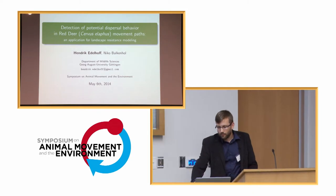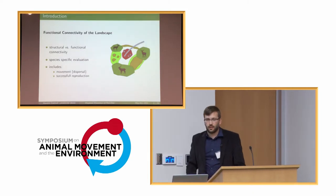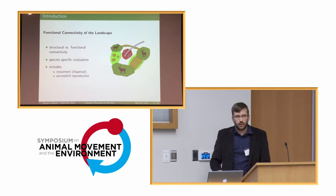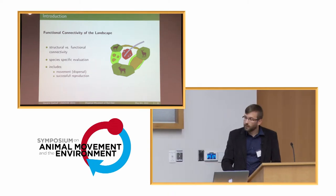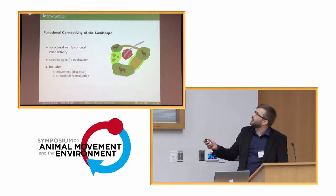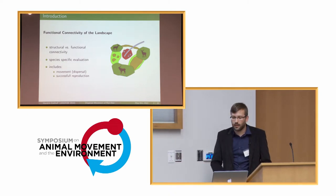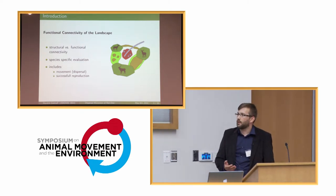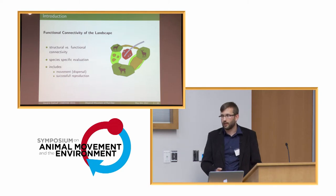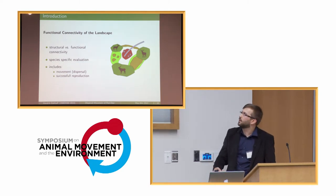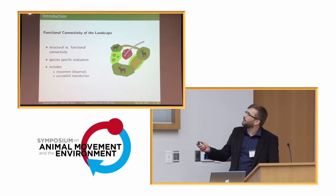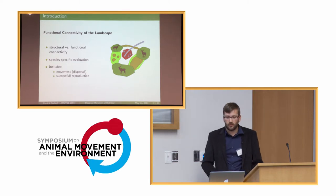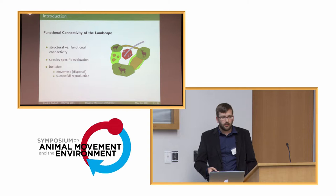We'll start with a short explanation of what functional connectivity is, because not everyone might be familiar with this term. If we look at landscape connectivity, we have to differentiate between structural and functional connectivity. Structural connectivity takes into account existing corridors of one habitat type connecting other existing habitats, whereas functional connectivity also considers that species might be able to move through hostile habitats or uninhabitable landscapes — maybe because there are some stepping stones, as shown here — or a species might even be able to cross barriers.